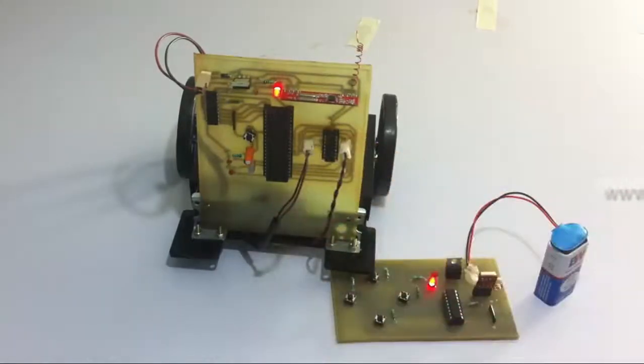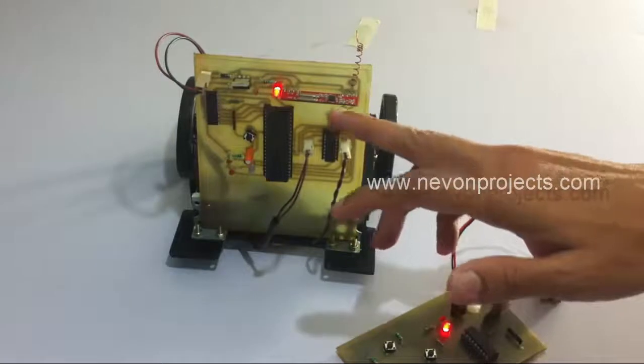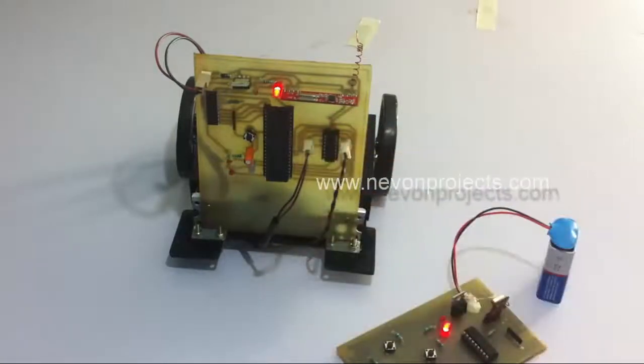The microcontroller is now interfaced with the RF module. The RF module is used to receive RF commands sent using this remote, and the commands received here are then transferred to the microcontroller.